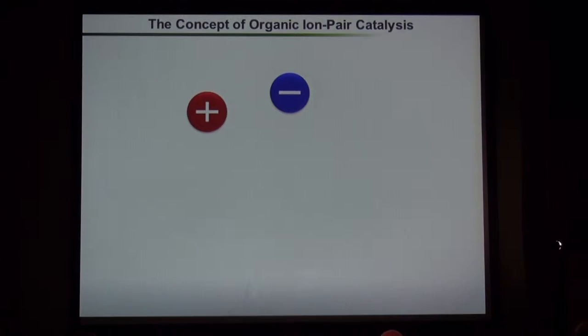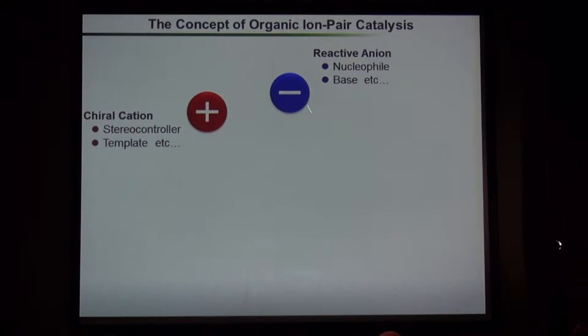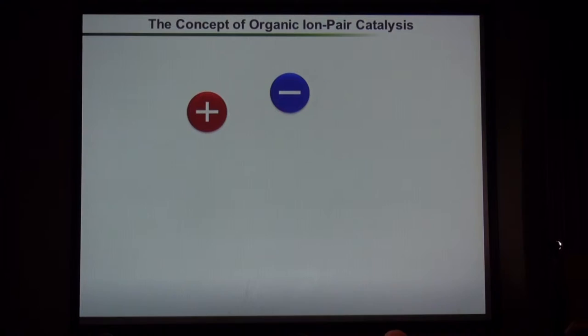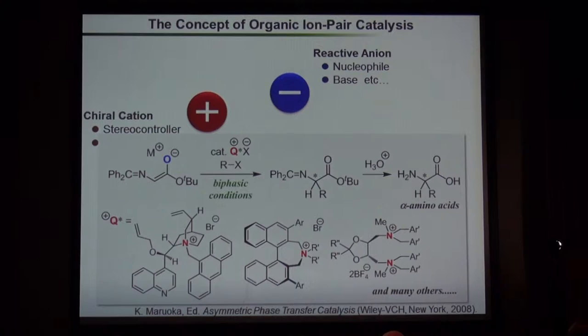Since we established our research group in 2006, we have been interested in the chemistry of ion pairs — specifically, controlling the reactive anion by using a chiral cation. Anionic species is one of the most fundamental reactive intermediates, so if we can control the reactive anion precisely, we could prepare complex organic frameworks very easily. But it is obviously not easy at all. This kind of ammonium salt is a representative example of chiral salt catalysis, and these catalysts have been widely applied to a very wide variety of highly stereoselective bond formations.